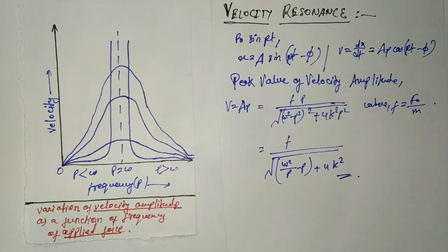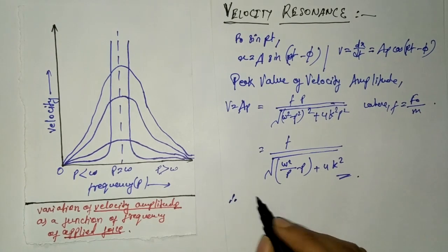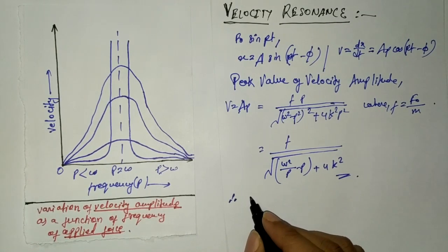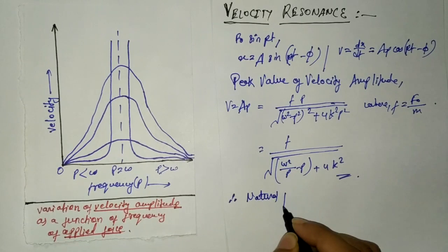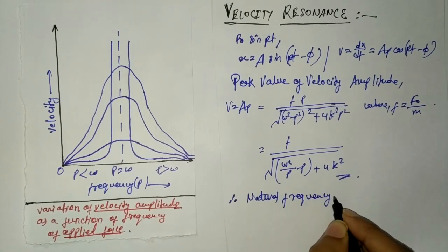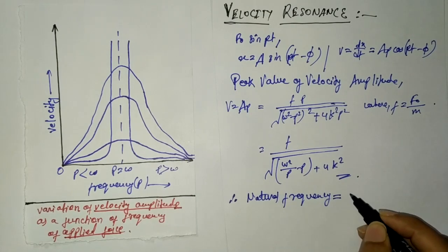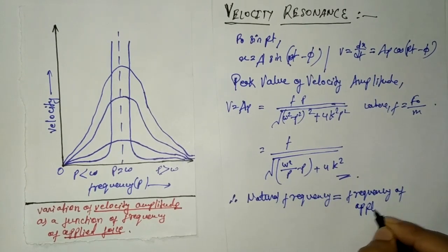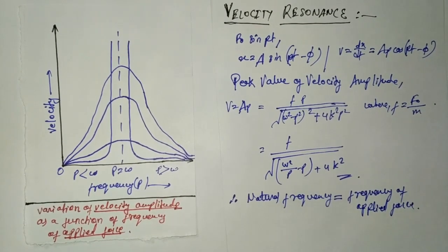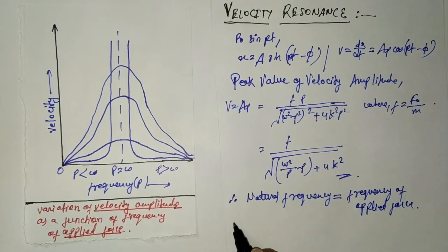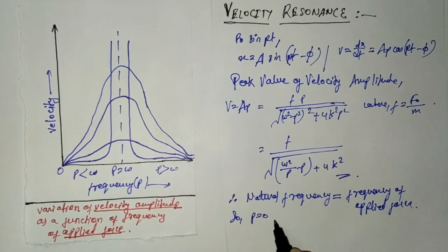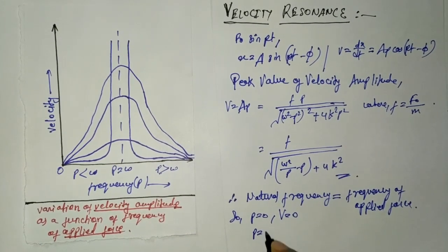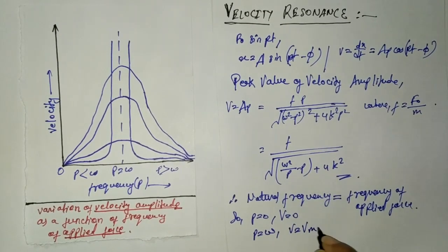Velocity resonance occurs when the natural frequency of the body equals the frequency of the applied periodic force, i.e., when omega equals p. When p equals zero, v equals zero. When p equals omega, v equals v_max, and the value of v_max equals f divided by 2k. These are the conditions for velocity resonance.